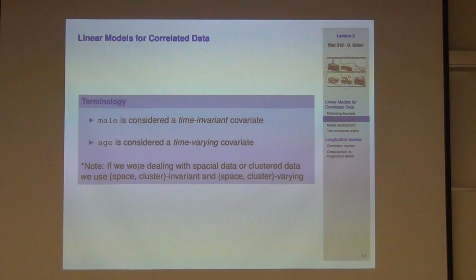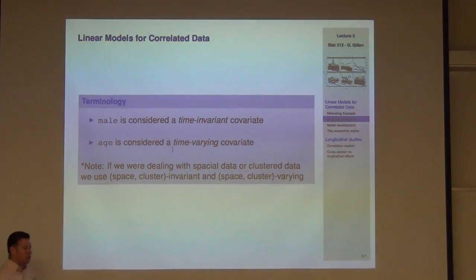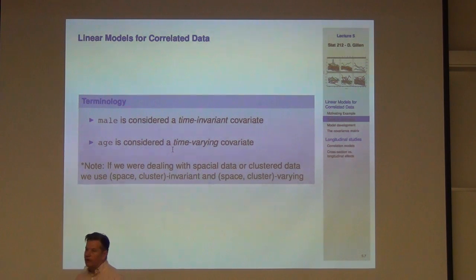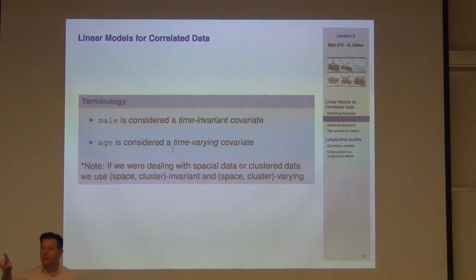In terminology: sex is considered a time-invariant covariate, and age is considered a time-variant covariate. This matters because the way we deal with confounding for those two types of variables differs, and the impact in terms of specifying the functional form of the variance also differs.